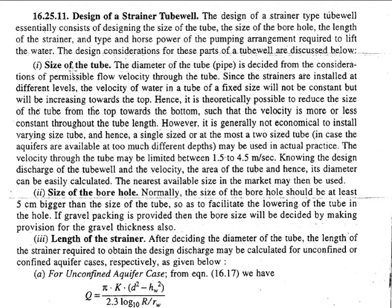First is the size of the tube. The size could theoretically be less at the top or more at the bottom depending upon flow velocity, but such varying sizes are not permitted. Since we must limit the velocity of water through the tube to between 1.5 to 4.5 meters per second, if we know the discharge and this velocity, we can calculate the cross-sectional area and determine the diameter of the tube.